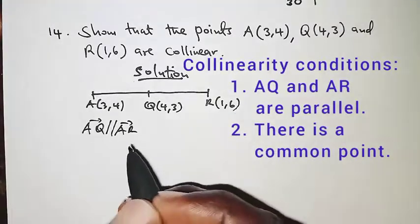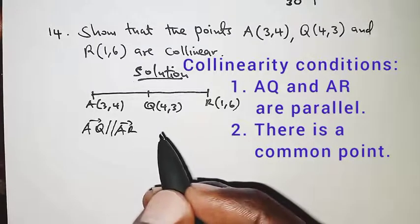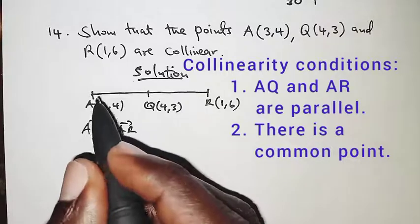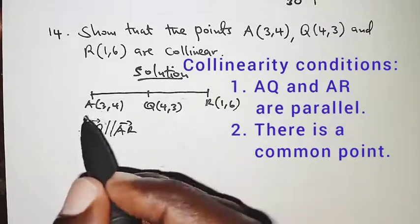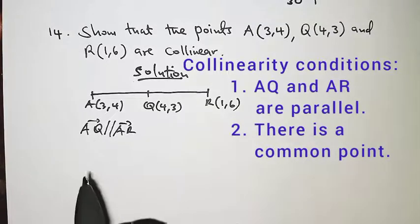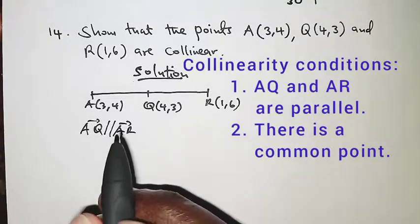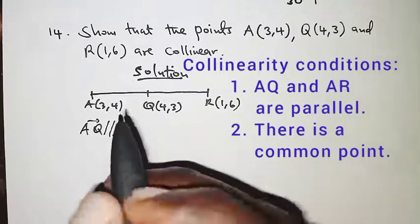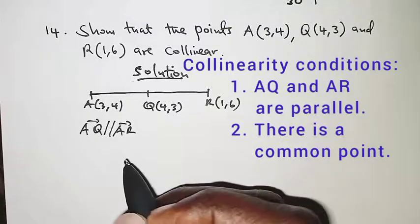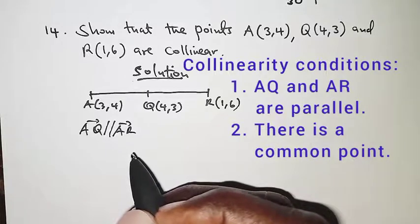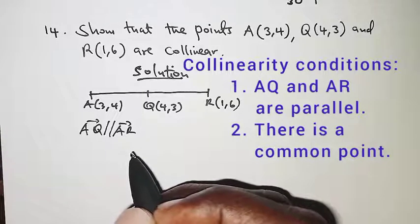If they're parallel, then that is one of the conditions that the three points are collinear. After that, you also need to show that there is a common point.